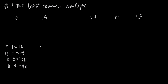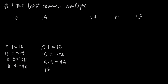I could also look at the multiples of 15. I could say 15 times 1 gives me 15, 15 times 2 gives me 30, 15 times 3 gives me 45, 15 times 4 gives me 60, and I could keep going. So 15, 30, 45, and 60 are all multiples of 15.